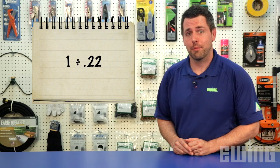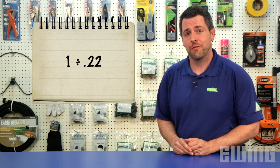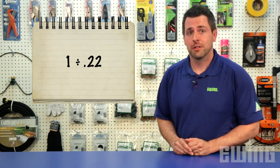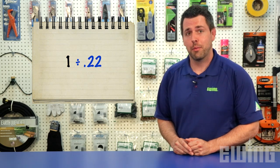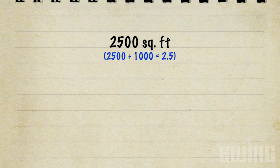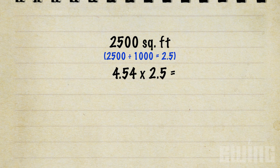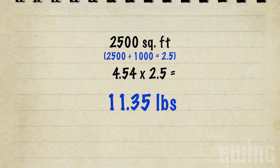Next, we'll divide our one pound per thousand square feet by the nitrogen percentage. This will give us the amount of fertilizer by weight that we need to cover 1,000 square feet of turf. So take one pound, divide by 0.22, and you get 4.54 pounds of 22-0-0 per thousand square feet. So if we have 2,500 square feet of lawn, we'll multiply 4.54 times 2.5 to determine that we'll need to spread a total of 11.35 pounds of this particular fertilizer blend to meet the nitrogen requirements.